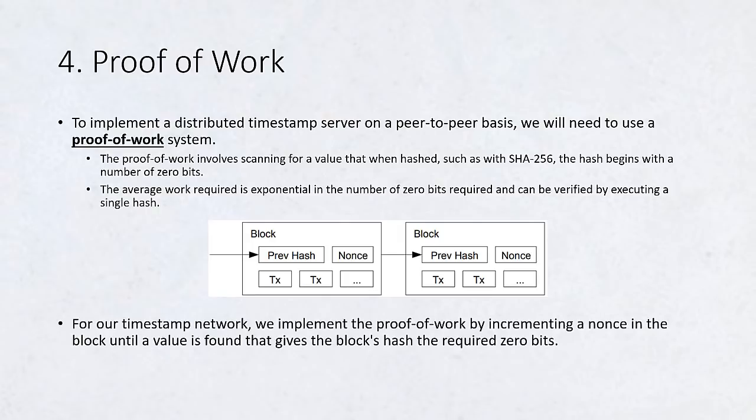For our timestamp network, we implement the proof-of-work by incrementing a nonce in the block until a value is found that gives the block's hash the required zero bits. Once the CPU effort has been expended to make it satisfy the proof-of-work, the block cannot be changed without redoing the work. As later blocks are chained after it, the work to change the block would include redoing all the blocks after it.